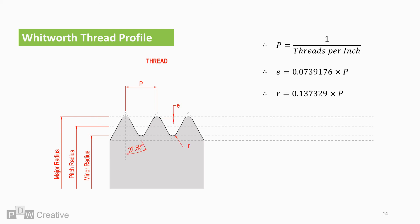The surrounding geometry for the thread can be worked out by knowing the pitch. E marks the beginning of the radius and is found by P times 0.739176. The radius, R, is 0.137329 times P.